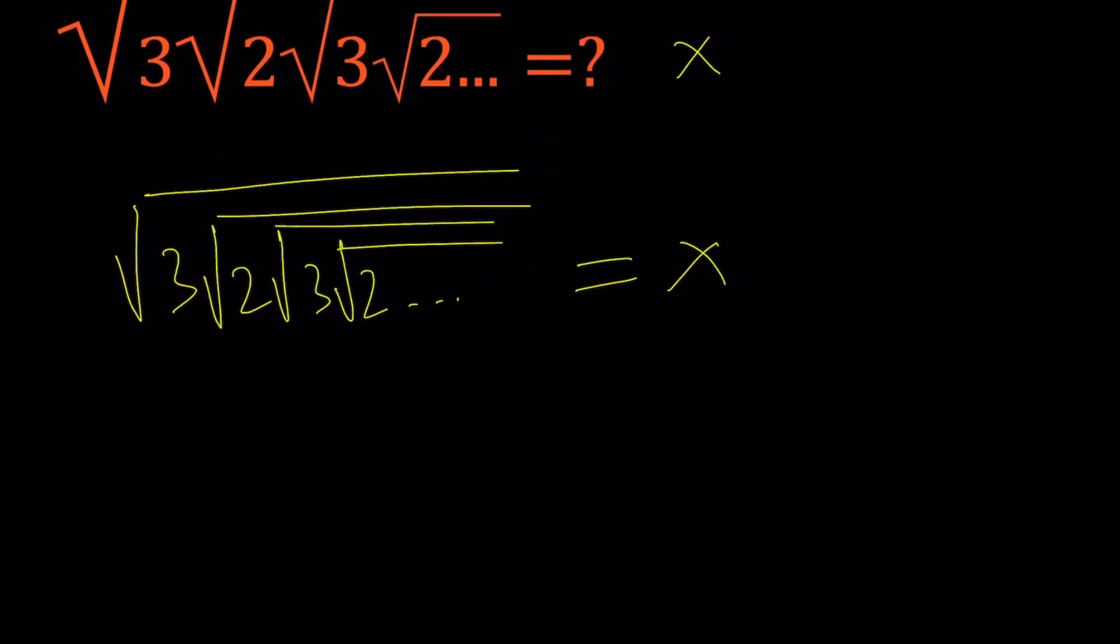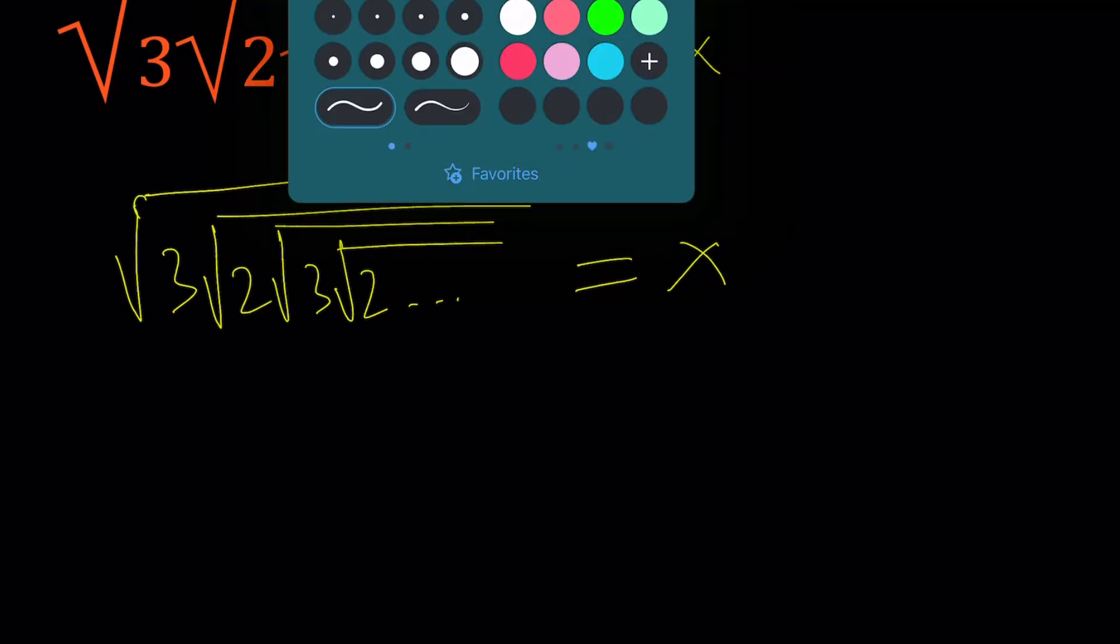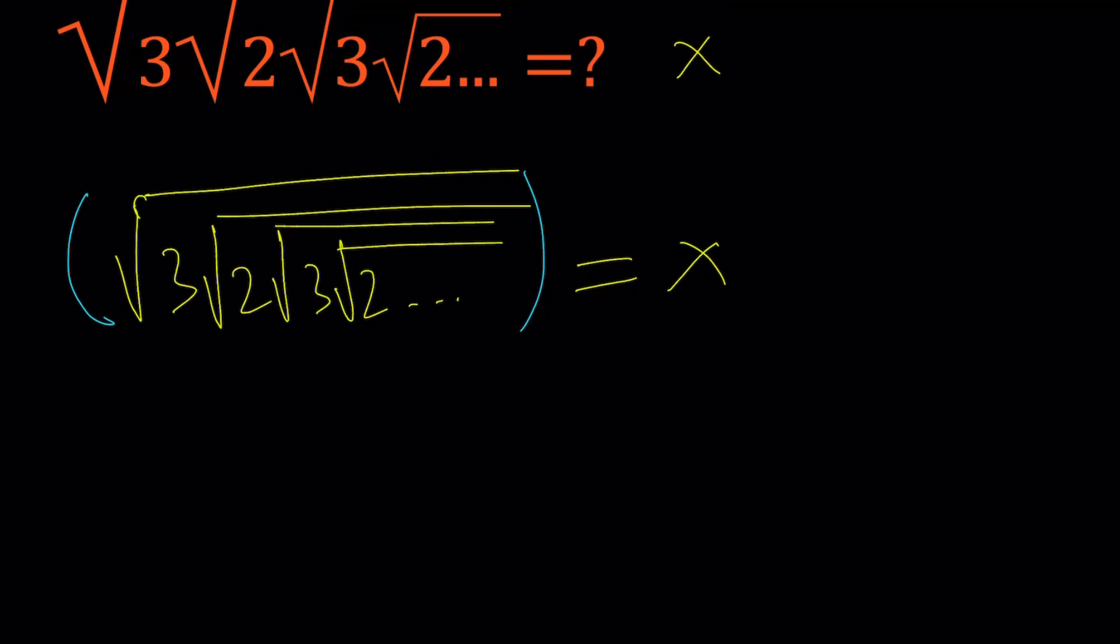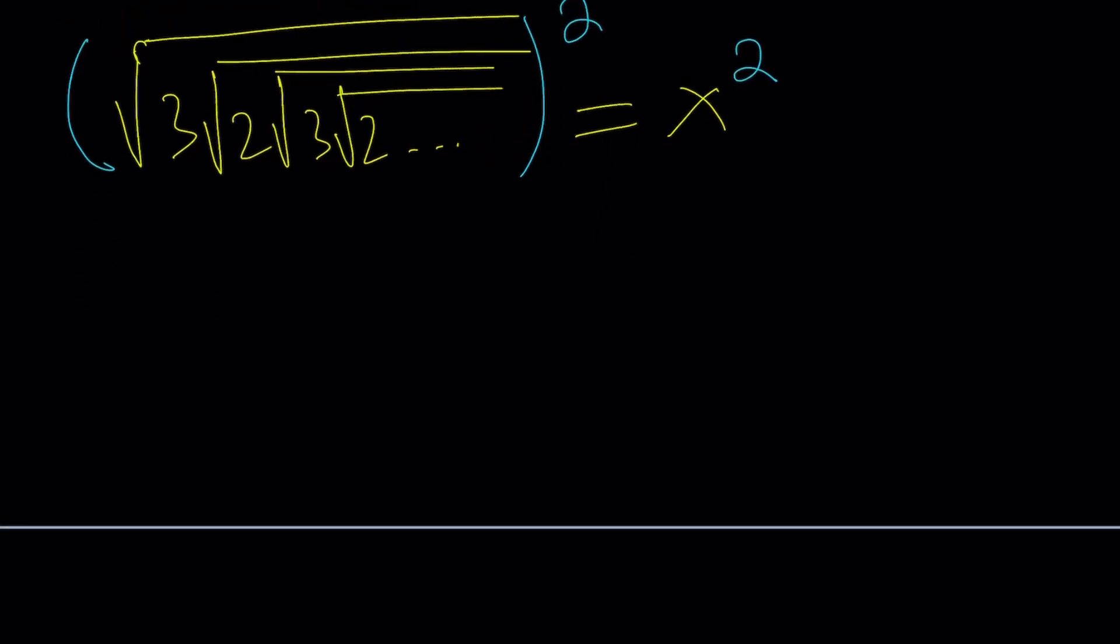Now, notice that this expression kind of repeats itself. What is the pattern? The pattern is we have the three and the two and then the three and the two and the three and the two and this goes on forever. So there's a pattern. Nice. I'd like to square both sides because it makes sense, right? Well, you'll get rid of the outermost radical at least. So three times the square root of two times the square root of three times the square root of two dot dot dot is going to equal x squared. Great. But not super great.